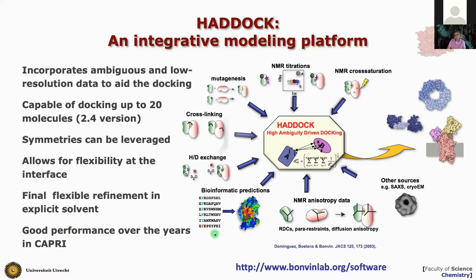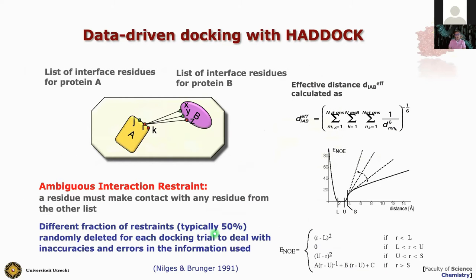How do we encode information? One key source is knowing that some residues are important for the interaction — perhaps from a mutagenesis experiment where mutating residue X prevents complex formation. We know the residue is important for binding, but we don't know which contacts it makes. We want to define an energy function that forces this residue to be at the interface. The way to do that is the concept of Ambiguous Interaction Restraints — AIRs — or ambiguous distances. This concept was originally introduced for NMR structure calculations by Michael Nilges to deal with ambiguity in NMR signal assignment.